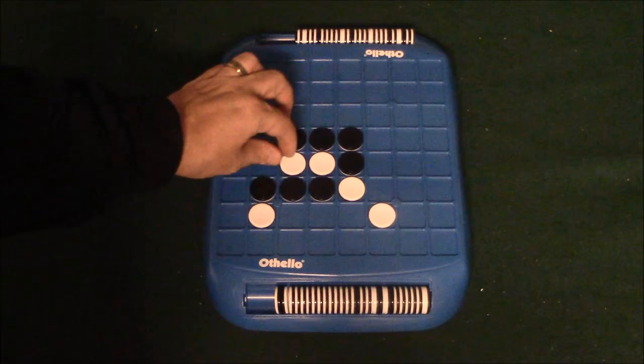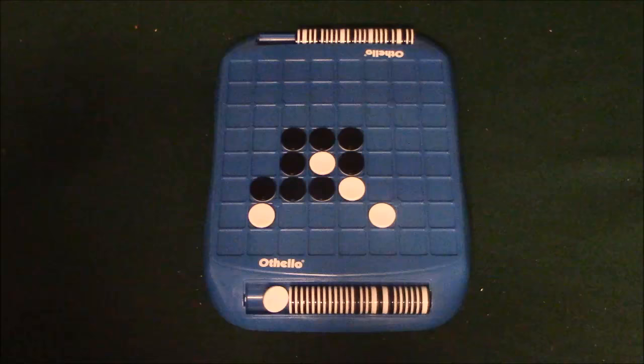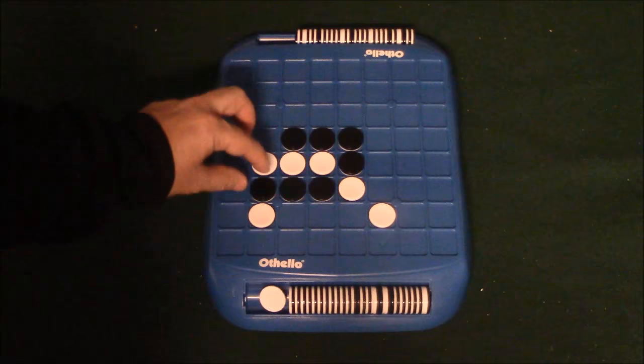Black goes here. And black's going to turn over this one and this one as well. So white goes ahead and goes. And let's say white decides to play here. White will turn over this one and this one.